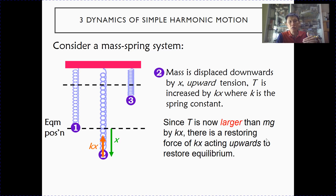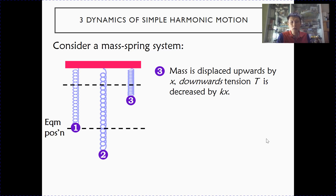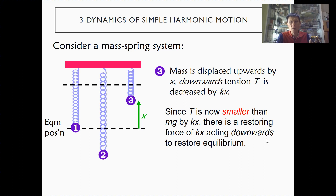The direction is upwards because it is trying to restore the object back to the equilibrium position. The same argument applies for position three. At position three the mass is displaced upwards, and because of that the tension is decreased by a value of kx. So T is now smaller than mg by kx, giving a restoring force of magnitude kx acting downwards to restore equilibrium.